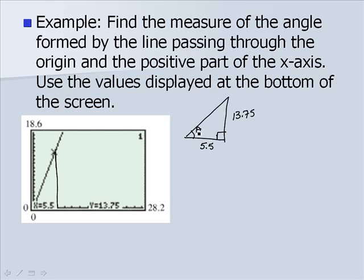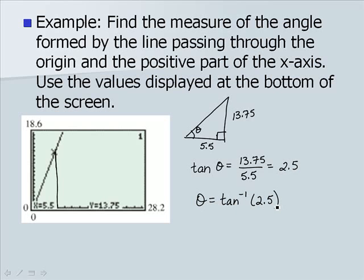We're trying to find the value of theta and we know the opposite and the adjacent side. We know that tangent involves those two sides. The tangent of theta would be 13.75 over 5.5 or 2.5. To find theta, we're going to take the tangent inverse of 2.5 and we want it to be in degrees. Make sure you're in degree mode when you do this and you'll end up with a value approximately of 68 degrees for theta.